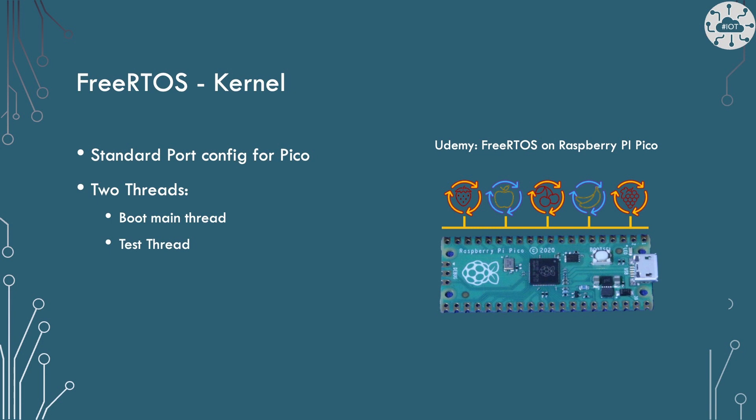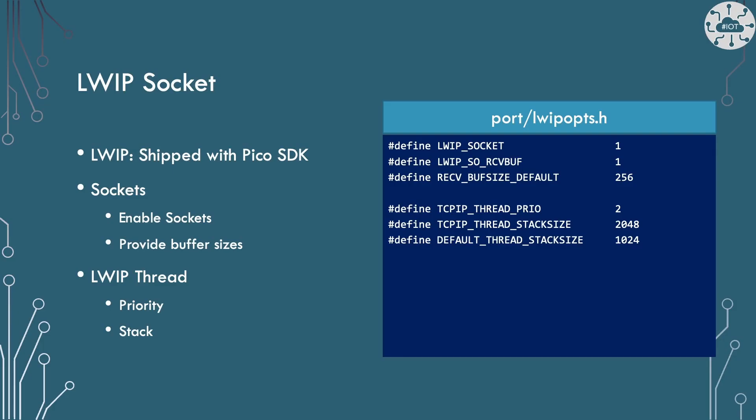I'm going to write just two threads in the example. The first is the boot or main thread I use in almost all my projects to set everything up and run background monitoring. The test thread does the real work. I won't go into detail on FreeRTOS in this video as we're focused on sockets — I do have a Udemy course covering the whole FreeRTOS kernel library for the Raspberry Pi Pico, PicoW, or any RP2040 board. The LWIP configuration to enable sockets is the same as last time, in the port LWIP folder.